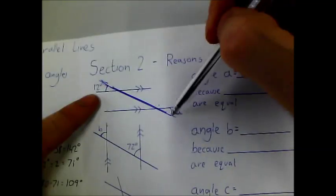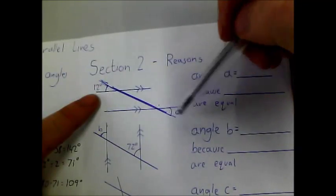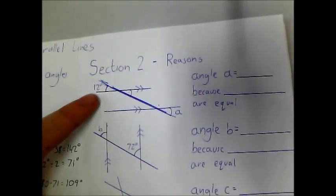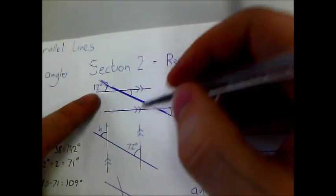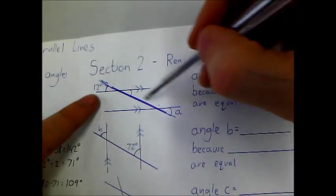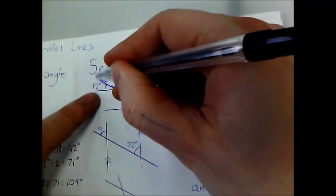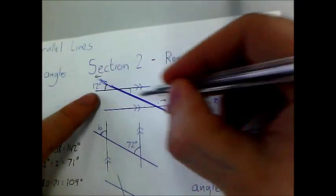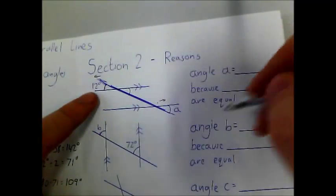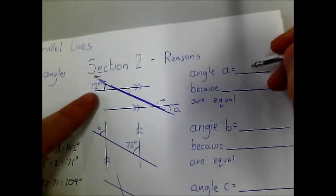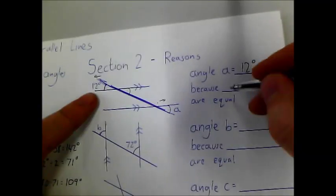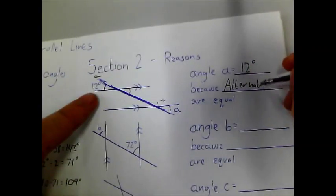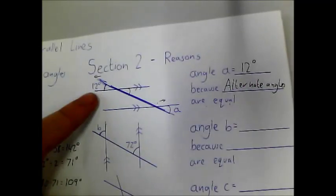Firstly, we need to decide: are these two angles equal? The answer is yes. Because that will be equal to this, and this bit is in the same position as this one. The reasoning is they are on different sides of the transversal line — this one is on the left-hand side and this one is on the right-hand side, so they are alternate angles. Angle A equals 12 degrees because alternate angles are equal.